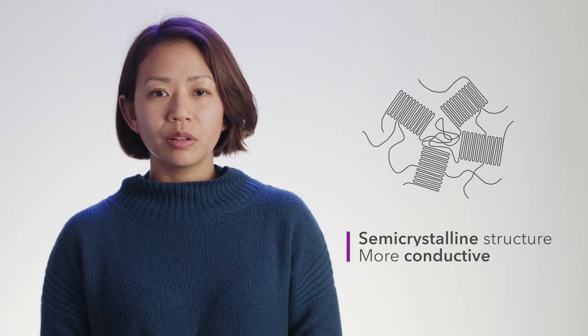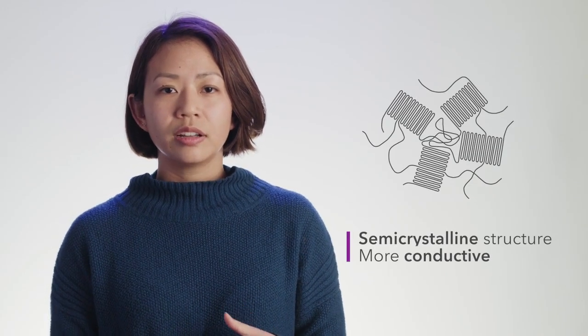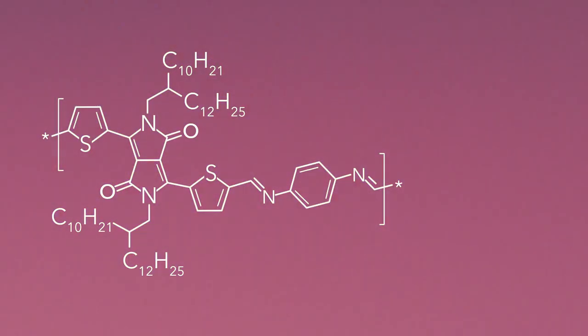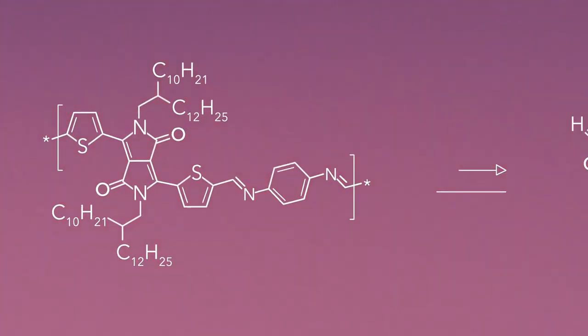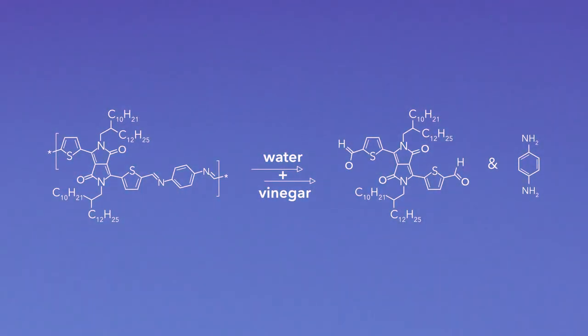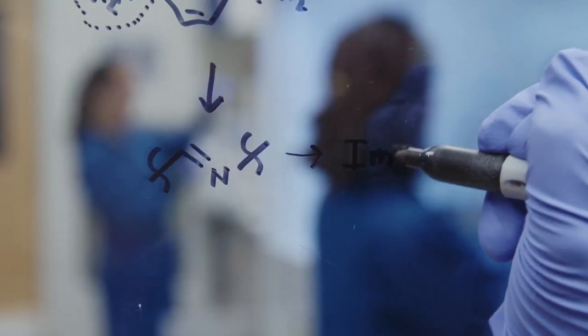Most semiconducting polymers consist of a chain of alternating single and double bonds, so the electron can travel through this network. We're interested in introducing a bond that imparts the electronic activity to the semiconductor without breaking the conjugation. So instead of a carbon-carbon double bond, we use a carbon-nitrogen double bond. And this is known as the imine bond.